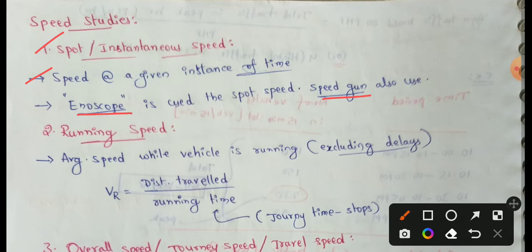Advantages of the enoscope method: it is easy to use and a cheap method. It is simple. Disadvantages: there is a possibility of human errors, and it is difficult to use for heavy multi-lane traffic.